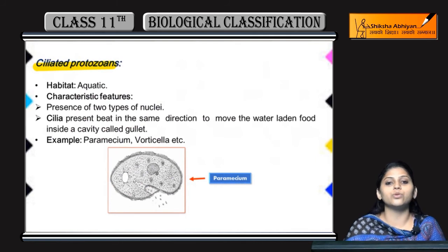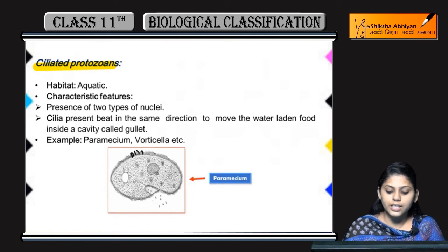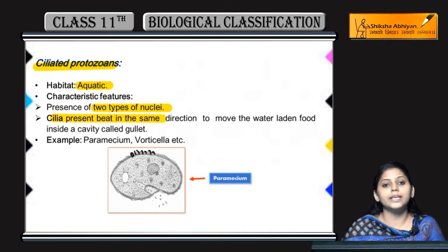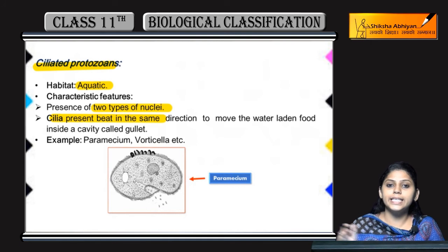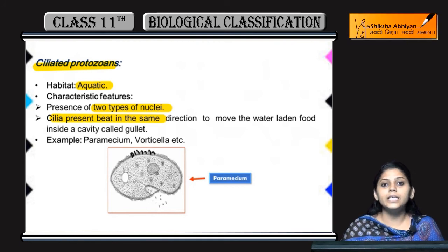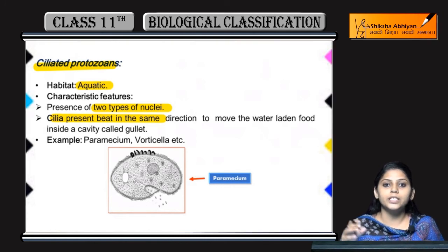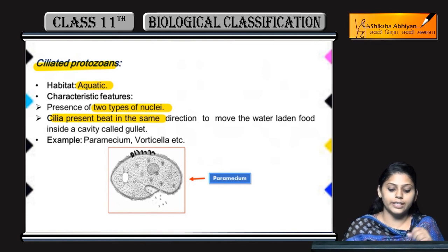Next, coming to ciliated protozoans — naam se pata lag raha hai, cilia present hoga. Habitat: they are aquatic in nature. They actually possess two types of nuclei. Jo yhe cilia present hote hai, yhe same direction mein move karte hai — jab bhi water body mein yhe ciliated protozoans present honge, yhe same direction mein cilia move karenge, taaki agar koi bhi prey a raha hai beech mein, usse capture karenge — gullet mein, ek cavity hoti hai body mein, jis mein ek hi direction mein move karke us gullet ke andar pohunchate hain. Iska example paramecium or vorticella.